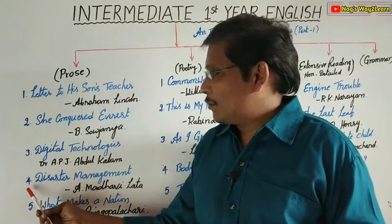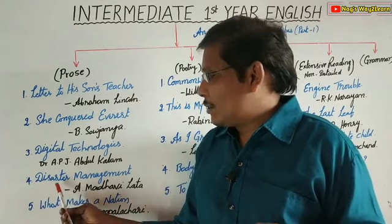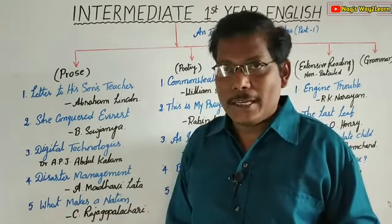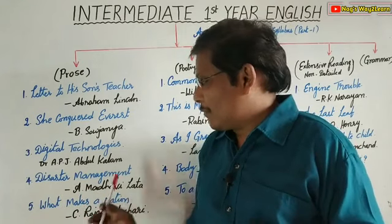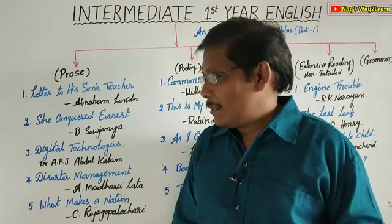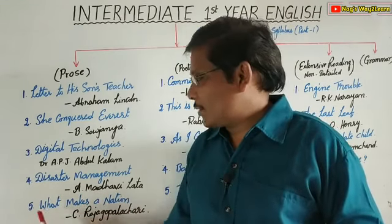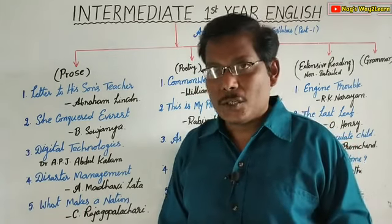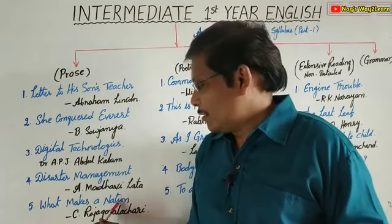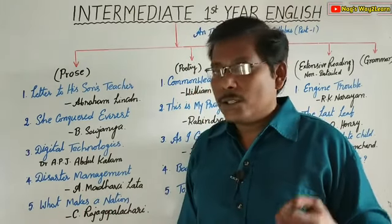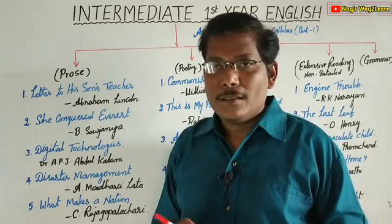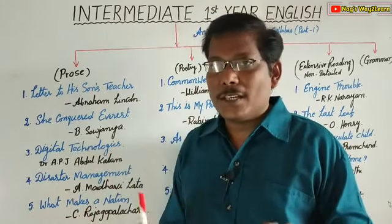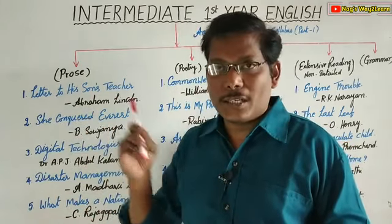The fourth one is 'Disaster Management' by A. Madhavi Latha. And finally, the fifth lesson is 'What Makes a Nation', written by C. Rajagopalachari. These are the five lessons given in the Prose section.